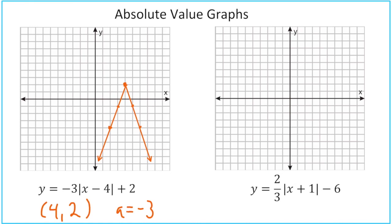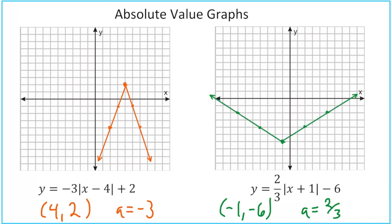For the graph on the right, opposite of positive 1 is negative 1, don't change the negative 6, giving us vertex (negative 1, negative 6). The a value is two-thirds. Starting at (negative 1, negative 6), we go up 2, right 3. We can do that again. Then to make the V, we go up 2, left 3 — do that again. Add our lines, and we have completed our absolute value graph.